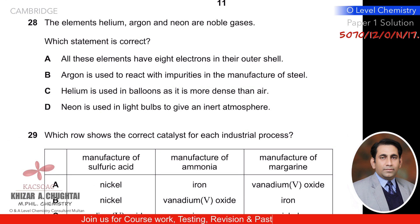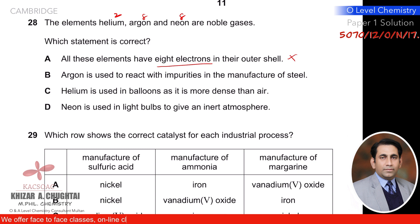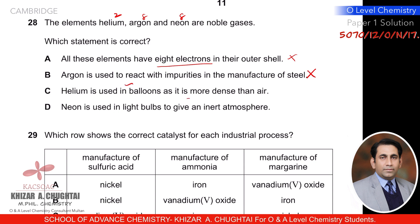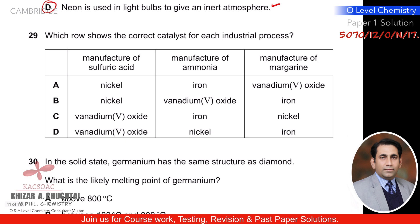Question twenty-eight: helium, argon, and neon are noble gases. All have eight electrons in their outer shell — no, helium has only two. Argon is used to react with impurities in steel manufacturing — no. Helium is used in balloons as it is more dense than air — no, it is less dense. Neon is used in light bulbs to provide an inert atmosphere — yes, this is true. So D is the correct option.